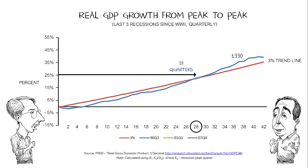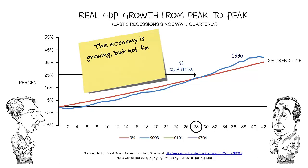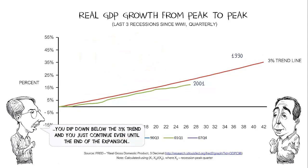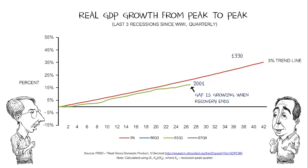It took 28 quarters or more. In the meantime, you're basically growing parallel to the 3%. And then the 2001 has exactly the same feature — you dip down below that 3% trend, and you just continue even until the end of the expansion. If anything, you're getting a little farther from the 3% trend at the very end. These data are displayed from cycle peak to cycle peak, and you can see that there was no recovery whatsoever. The fact that the line ends 27 quarters in is because that's the end of that recovery — we get a new recession at that point.